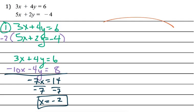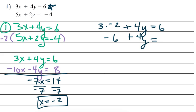So now I'll plug that back in. I've got all this space up here, so I'll use that space. I think I'll plug this into the first equation. So I'm going to write 3 times negative 2 plus 4y equals 6. I have negative 6 plus 4y equals 6, add 6 to both sides, 4y equals 12, divide by 4, and I get y is 3.